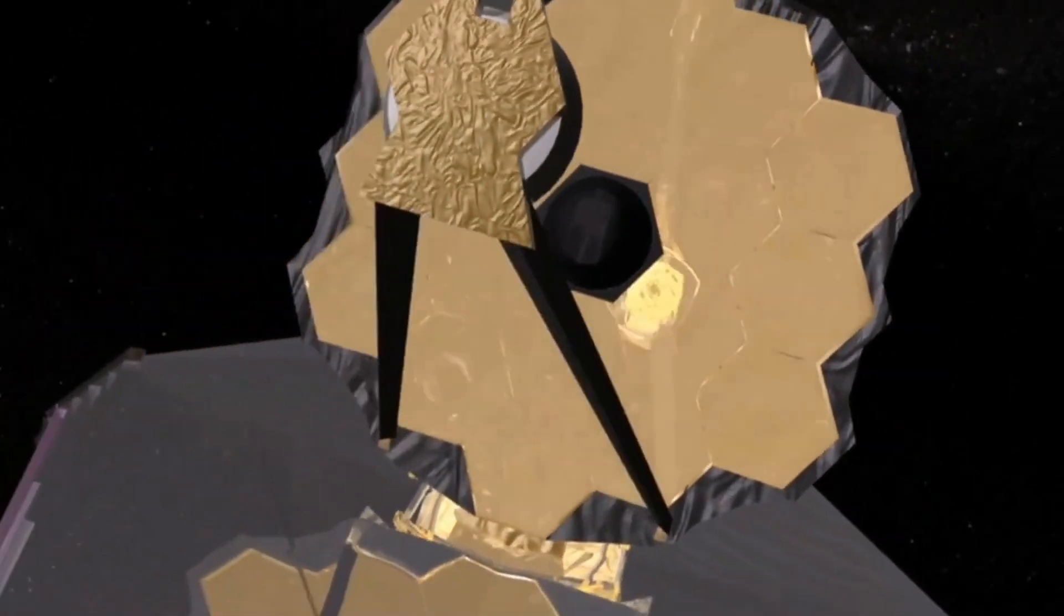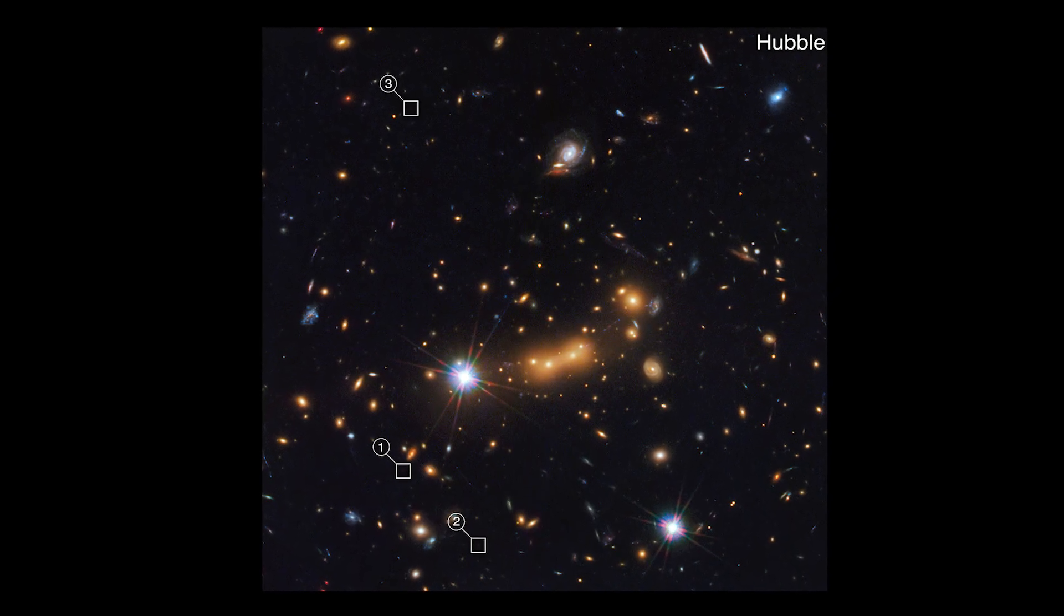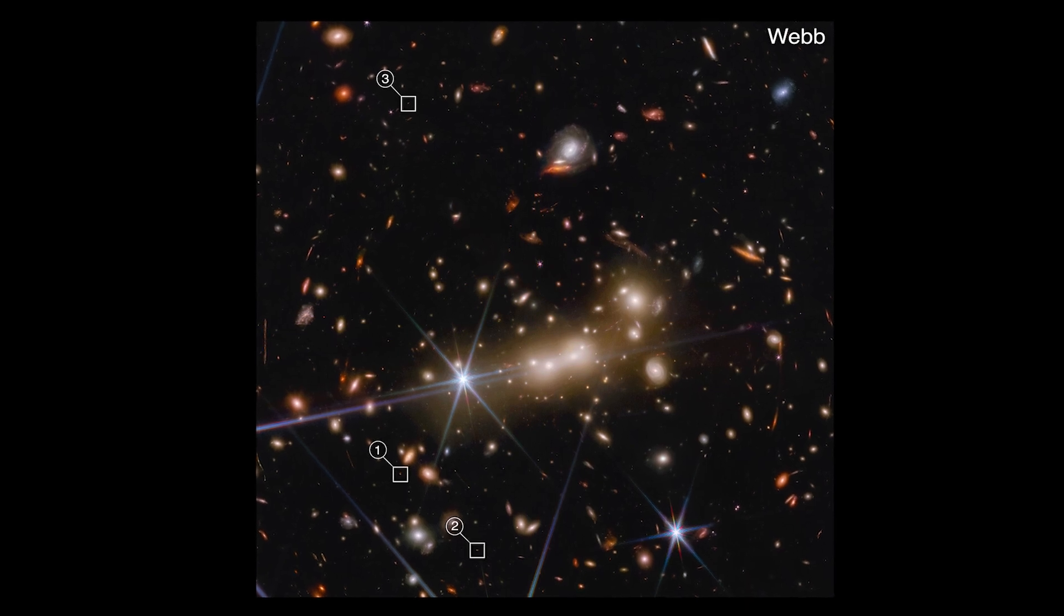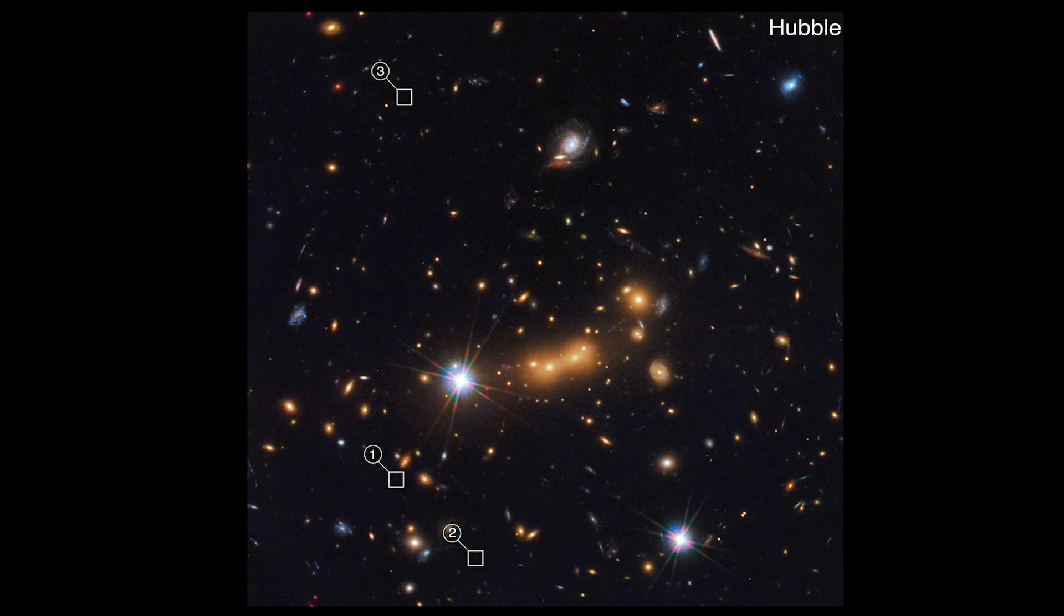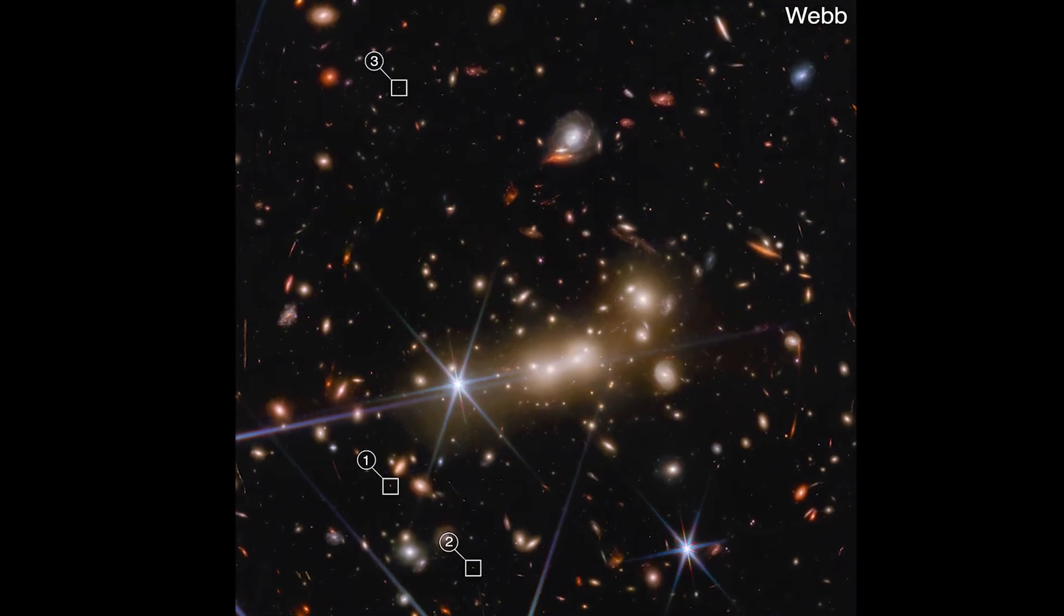Now, thanks to the James Webb Space Telescope, we were able to resolve two objects. Astronomers are currently arguing about whether there are two galaxies or two groupings of stars inside a galaxy. These are the questions that Webb is designed to help us answer.